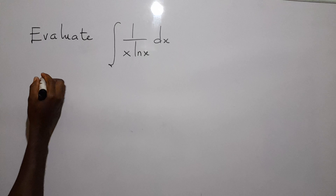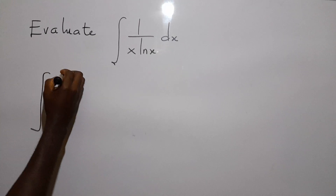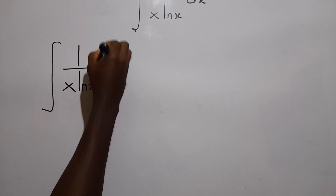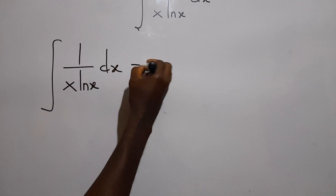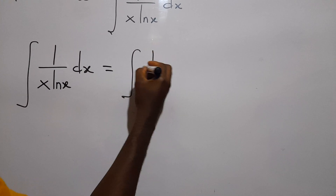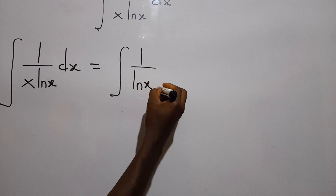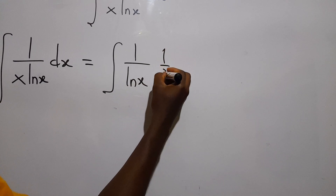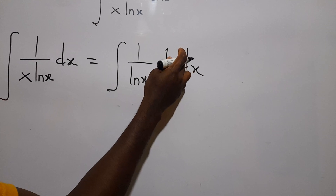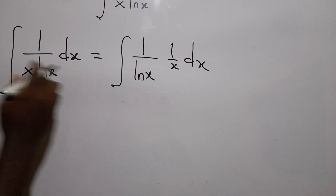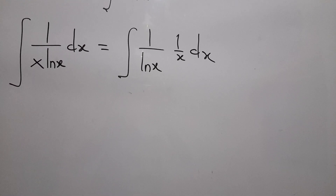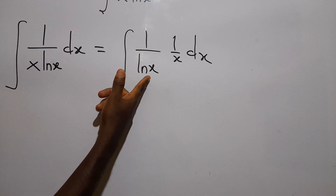The integral of 1 over x·ln(x) dx can be rewritten as the integral of 1 over ln(x) times 1 over x dx. If we multiply these together we still have 1 over x·ln(x), so the problem is not changed.